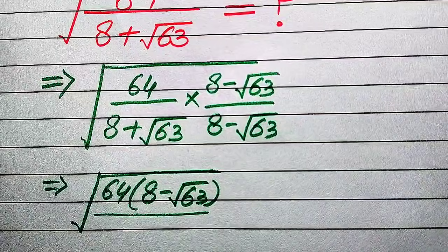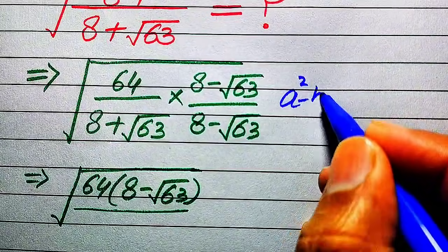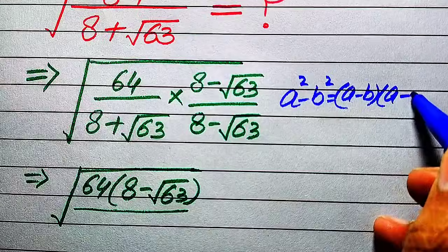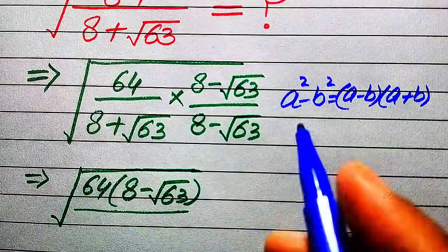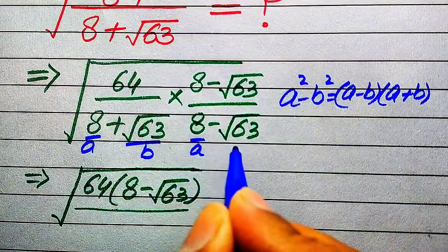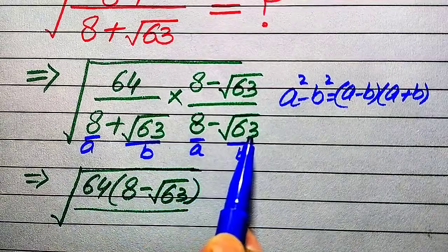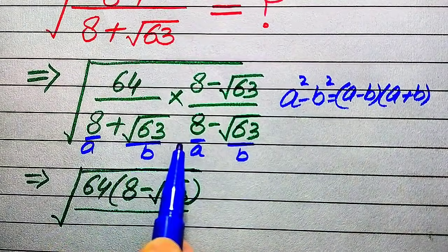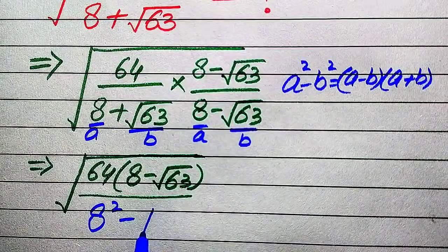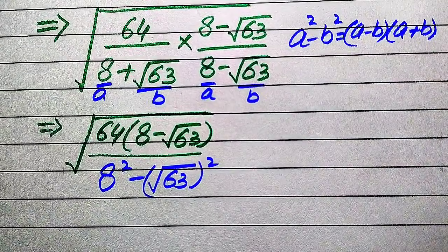In the denominator we use the algebraic formula: a squared minus b squared equals (a minus b) times (a plus b). Here our a term is 8 and our b term is square root of 63, so the denominator becomes a plus b times a minus b, which we can write as 8 squared minus (square root of 63) squared.